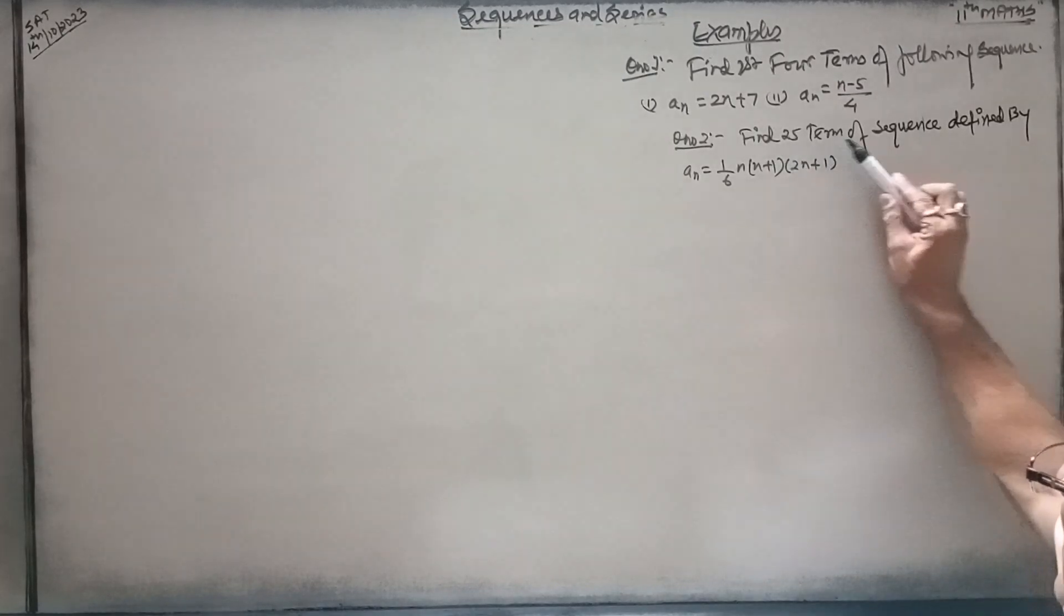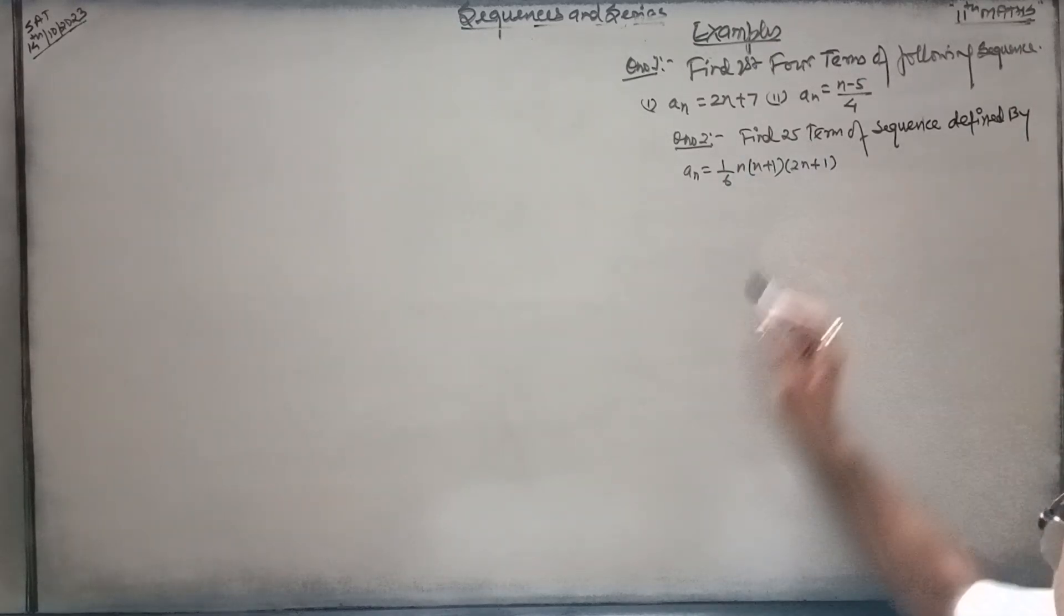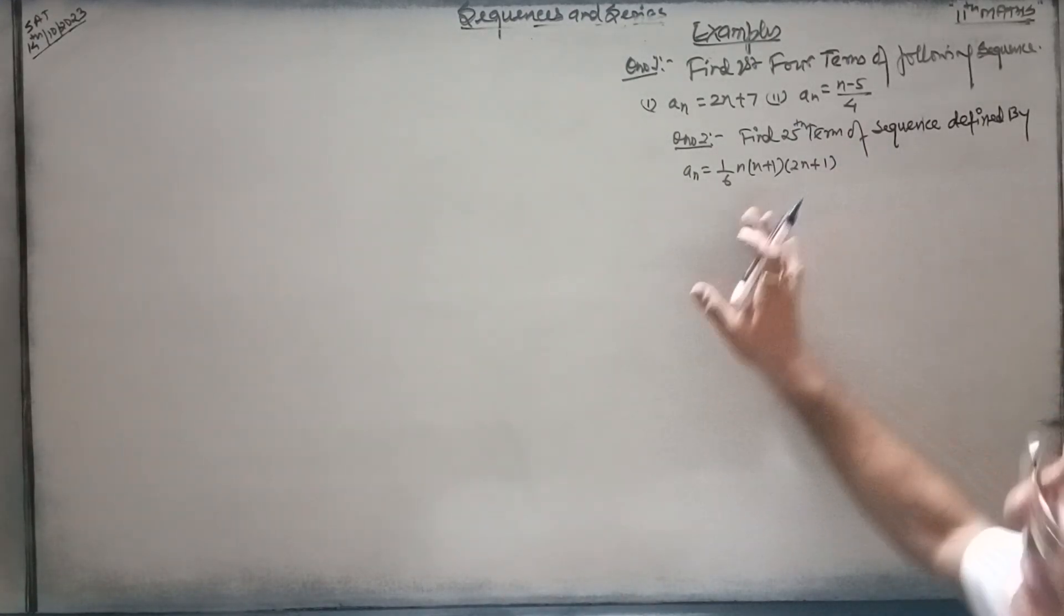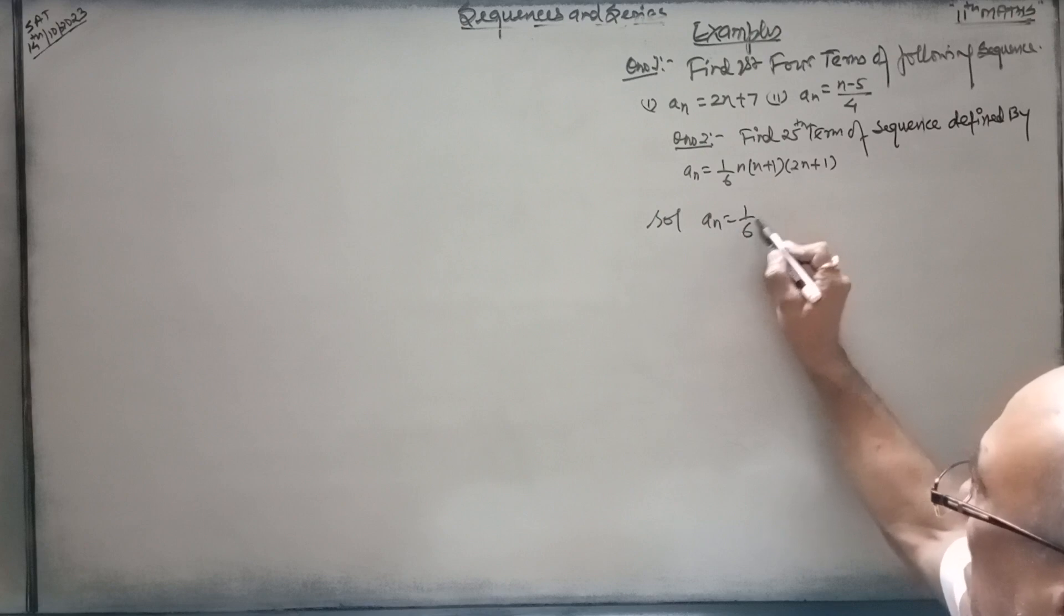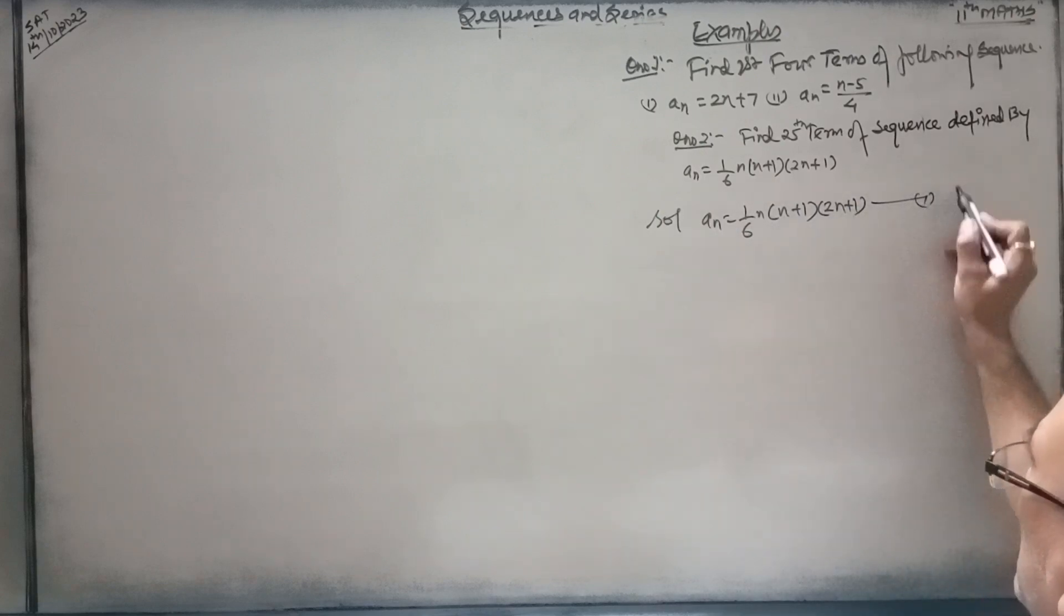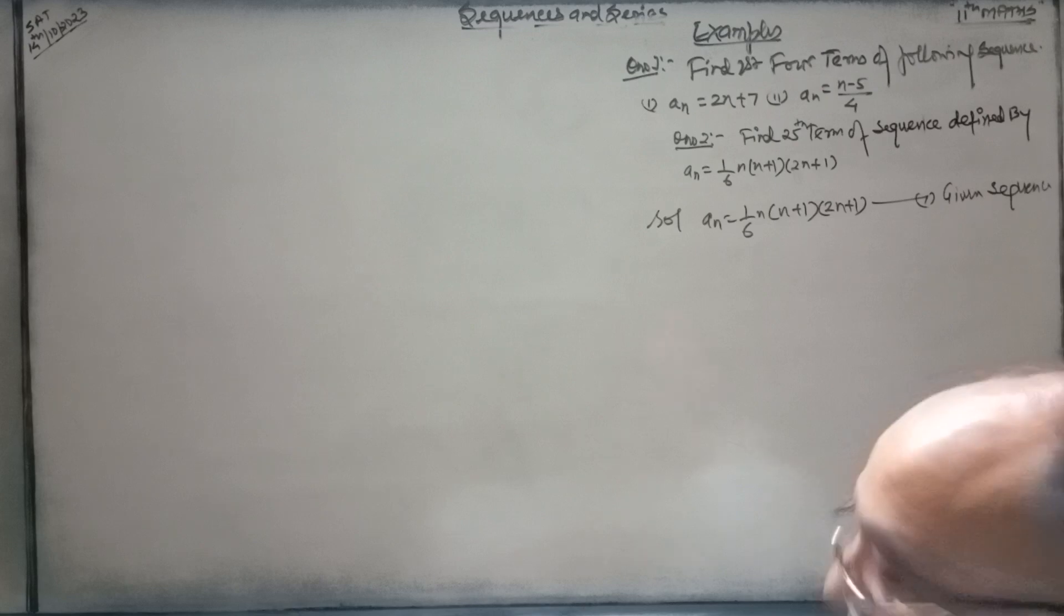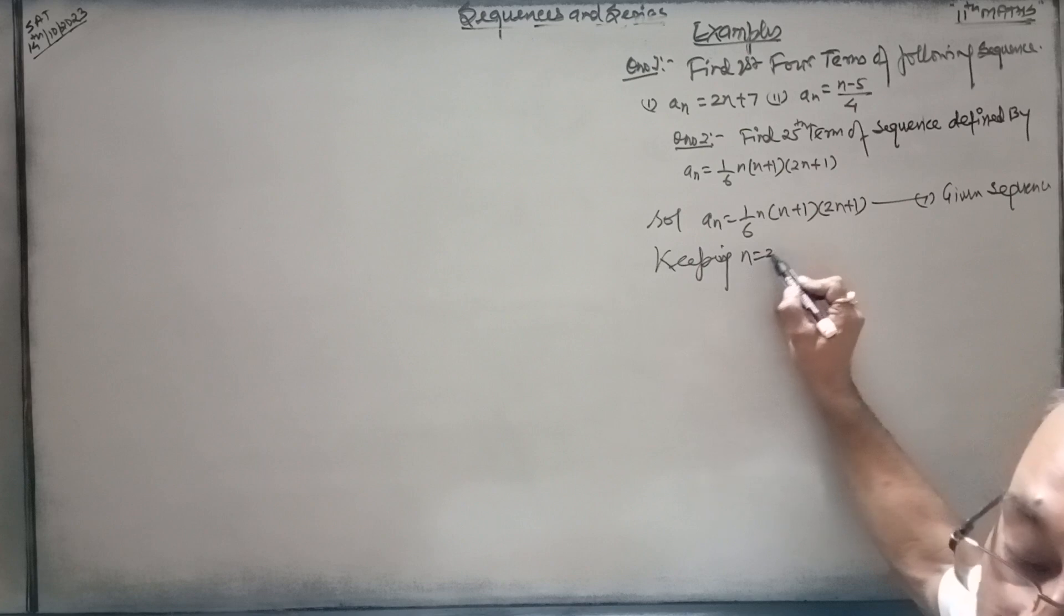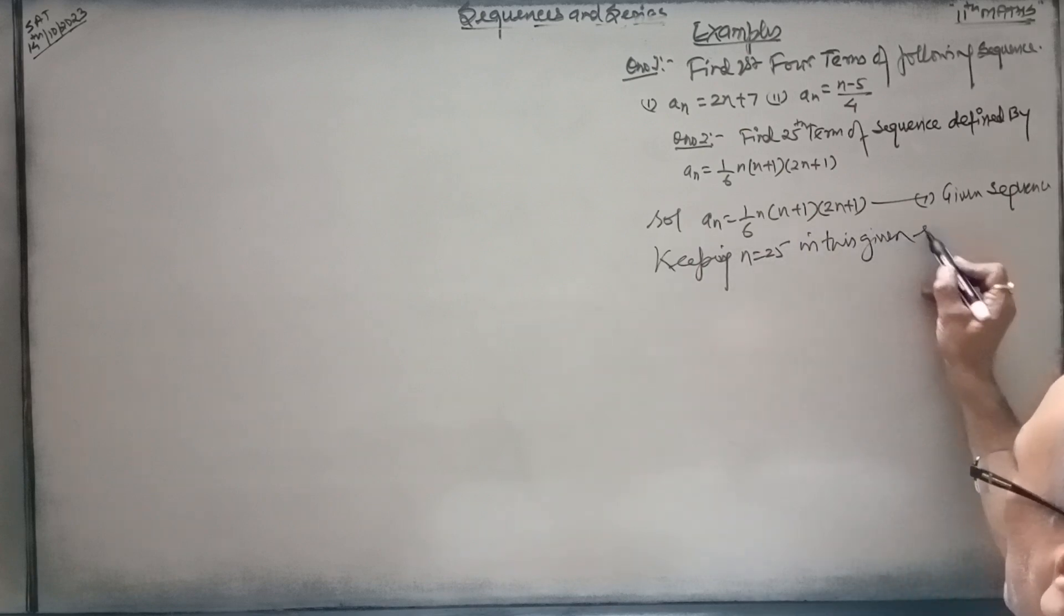Find the 25th term of a sequence defined by an is equal to 1 upon 6. Solution: a n plus 1 and 2n plus 1. Given 25, a sequence. Now keeping n is equal to 25 in this given sequence.